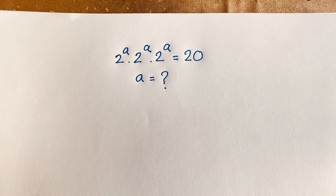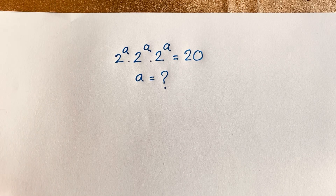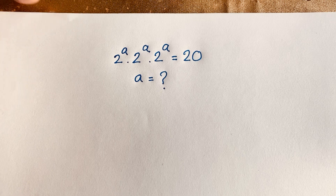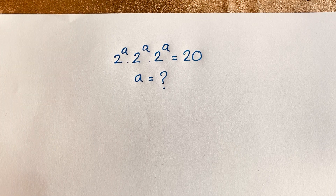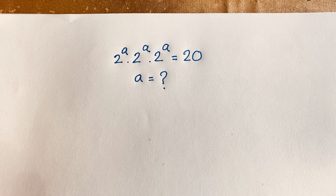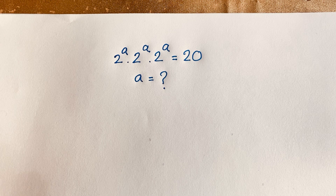Hello everyone. In this video, we have solved this interesting exponential equation — it is a Math Olympiad question. The equation is 2 to the power A times 2 to the power A times 2 to the power A, and it is equal to 20. We will find out the value of A in this exponential equation.